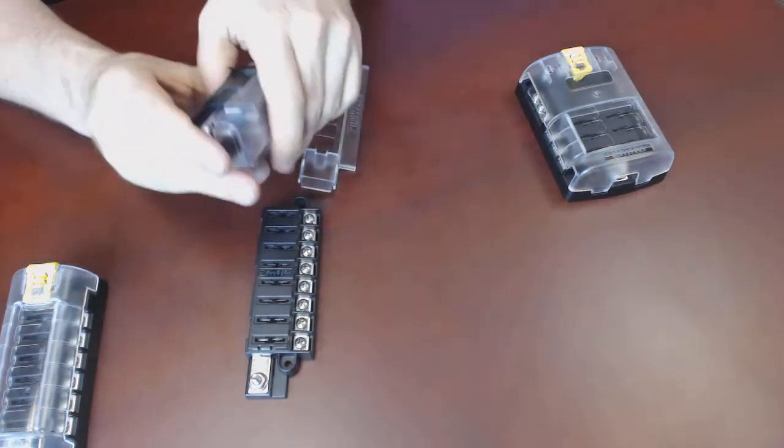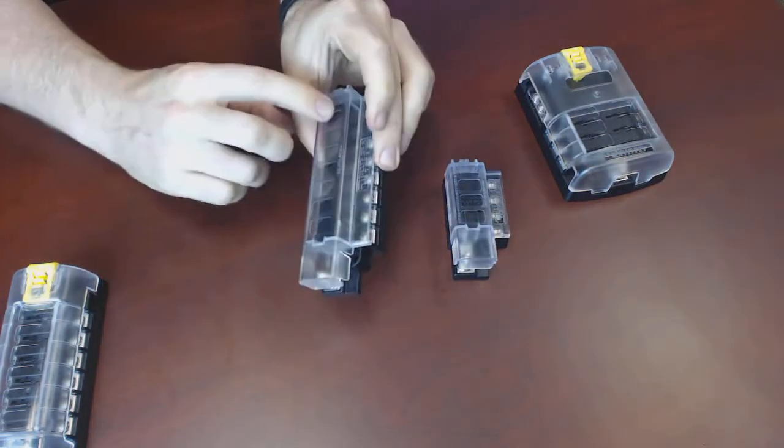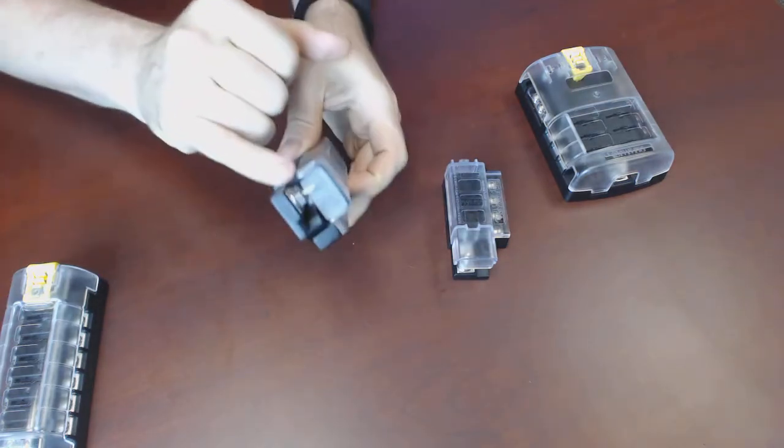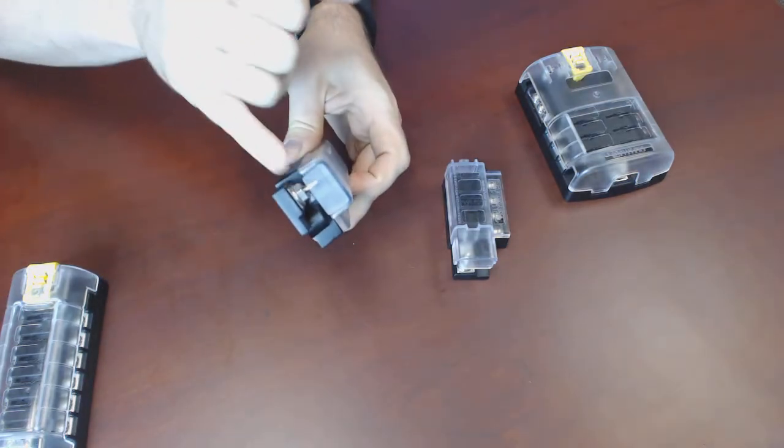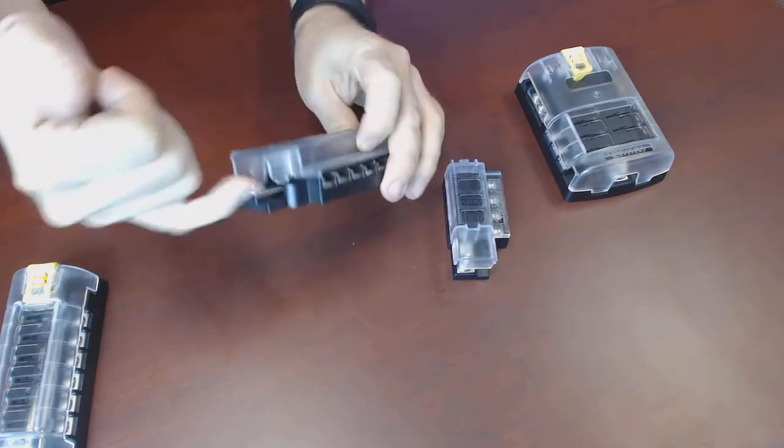Very good snap-on covers that go on nice and solidly, and again spaces for labels on them. There's also tabs that you can snap off here if that's not enough room for you, which normally it is, but if you have a larger connector, you can snap these tabs off to allow clearance on both those ones.